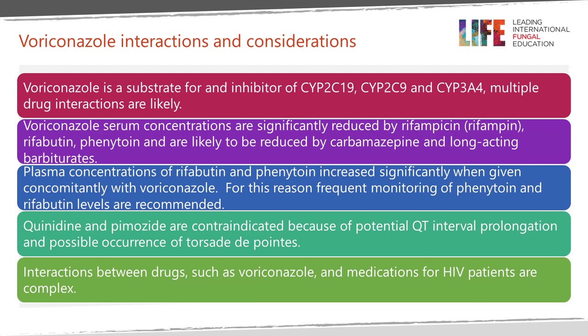Voriconazole is a substrate for and an inhibitor of CYP2C19, 2C9, and 3A4, opening it up for multiple drug interactions due to the involvement of so many CYP enzymes. Voriconazole concentrations may be significantly reduced by rifampicin, rifabutin, phenytoin, and are likely to be reduced by carbamazepine and long-acting barbiturates. Because plasma concentrations can be reduced quite significantly, therapeutic drug monitoring is important if you are using these drugs together.